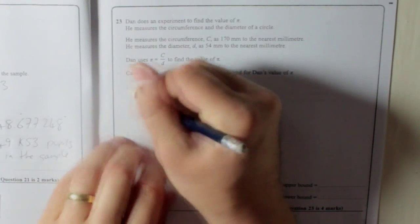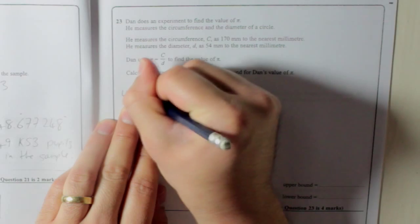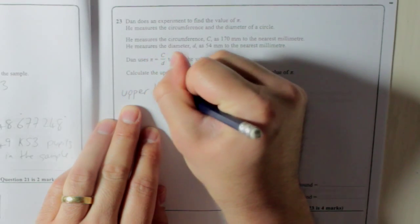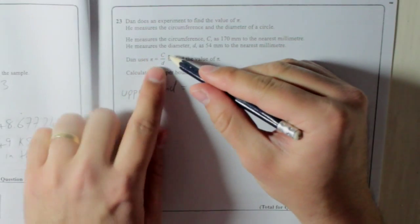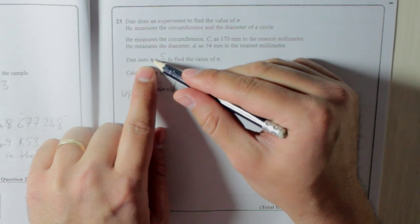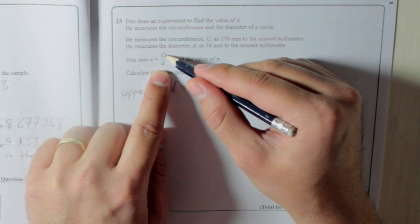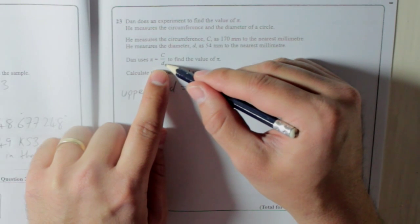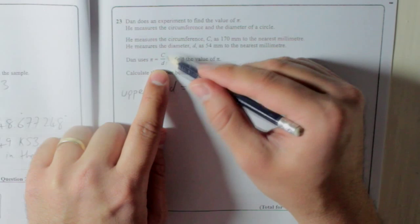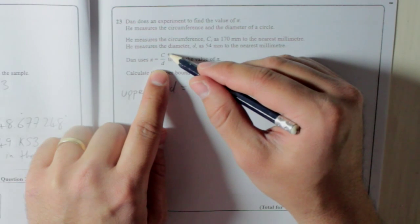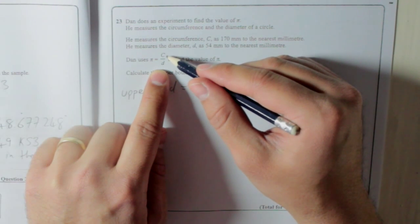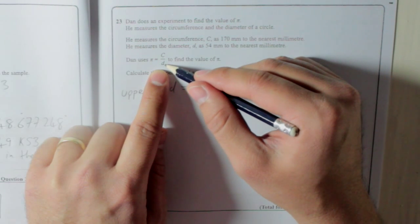So, let's find that upper bound. The upper bound, because it's a division, to get pi as big as we can possibly get it, we need our biggest C and divide it by the smallest D. That's how you get a big number when you're dividing. The number on top, the number you've got, needs to be as big as possible, and the number on the bottom needs to be as small.